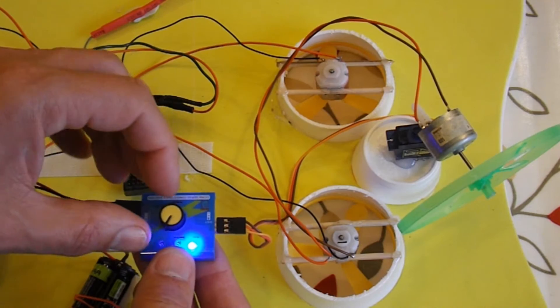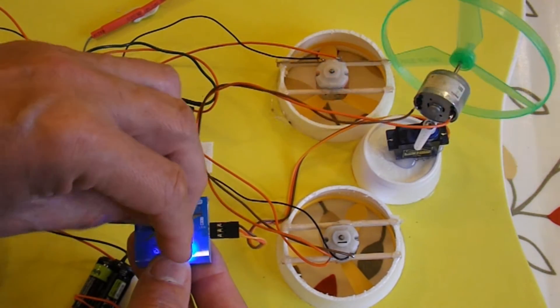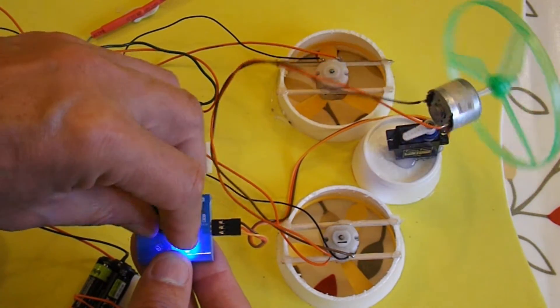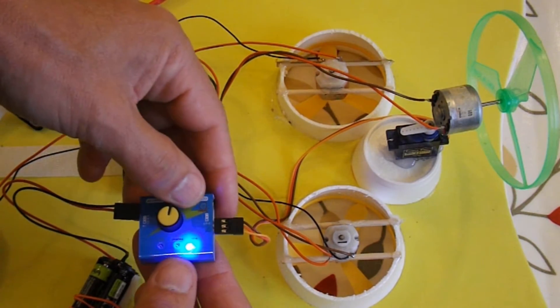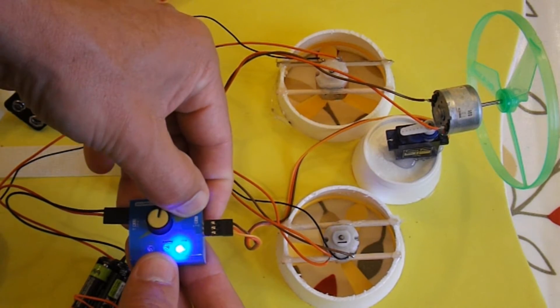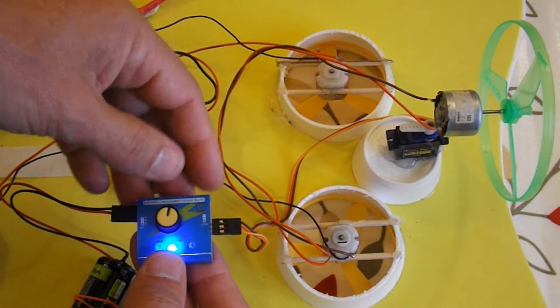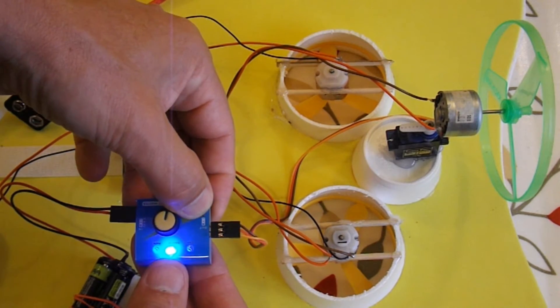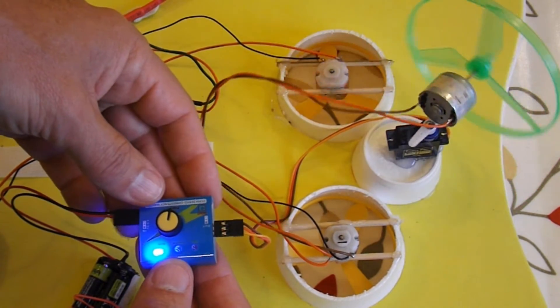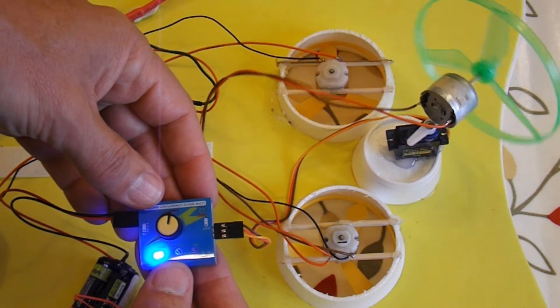So by turning this I can operate the servo. In the second position it checks the neutral position. And in the third position it does what it calls windscreen wiper mode.